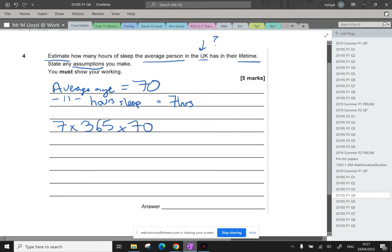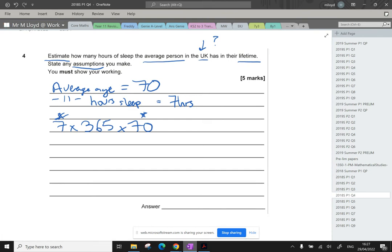So even if your assumptions are different, this number might be different, this number might be different. But the key is to multiply them all together. So seven hours sleep over 365 days, and then multiply that by the 70 years.